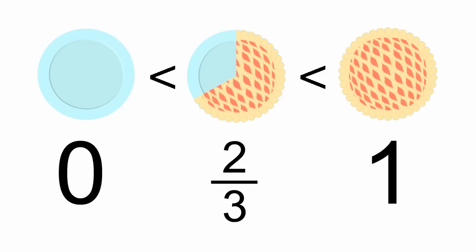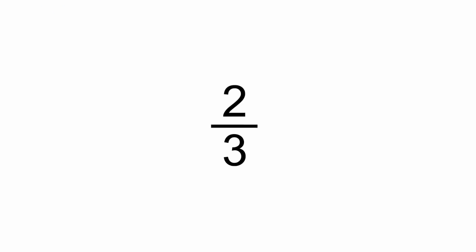Now, let's learn how to write fractions on a number line. Since we just talked about two-thirds of a pie, let's use two-thirds as our first fraction.